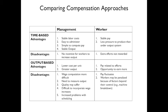For the worker, pay fluctuates — one week you're productive and earn a lot; the next week you feel bad, get less done, and receive a lower paycheck. Workers can also be penalized for factors beyond their control, like a machine breaking down or waiting on output from the previous station.